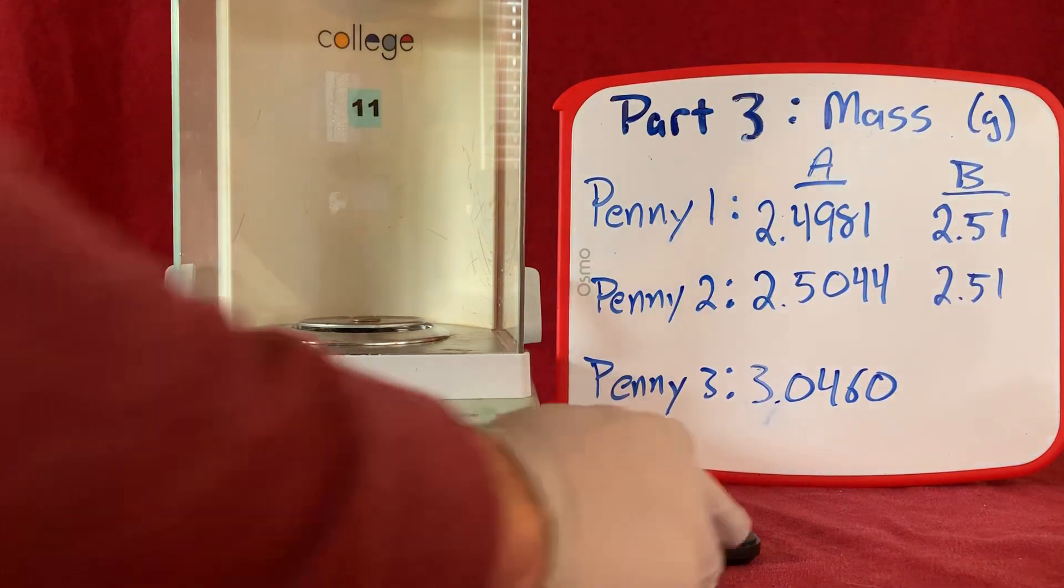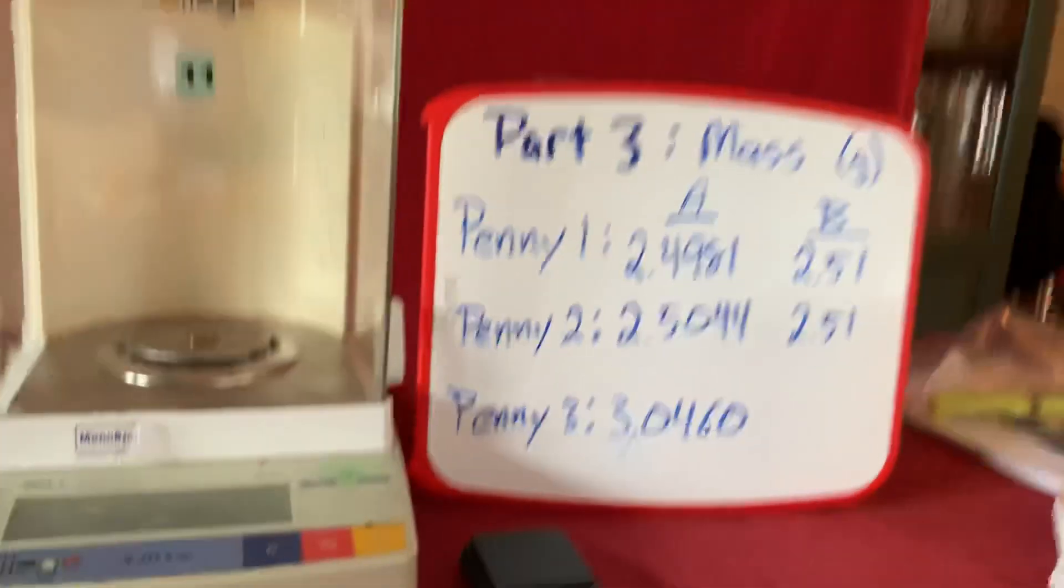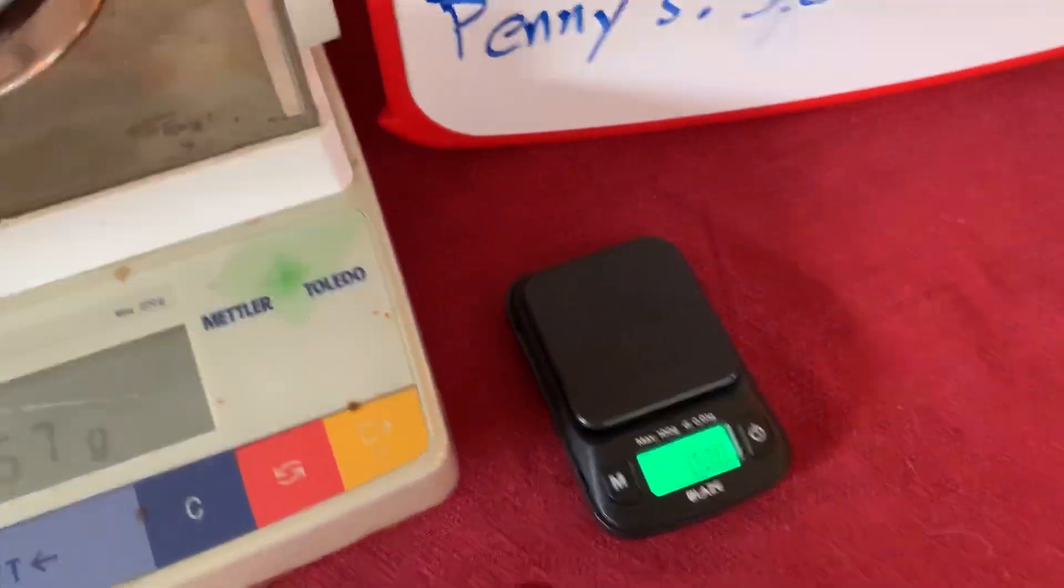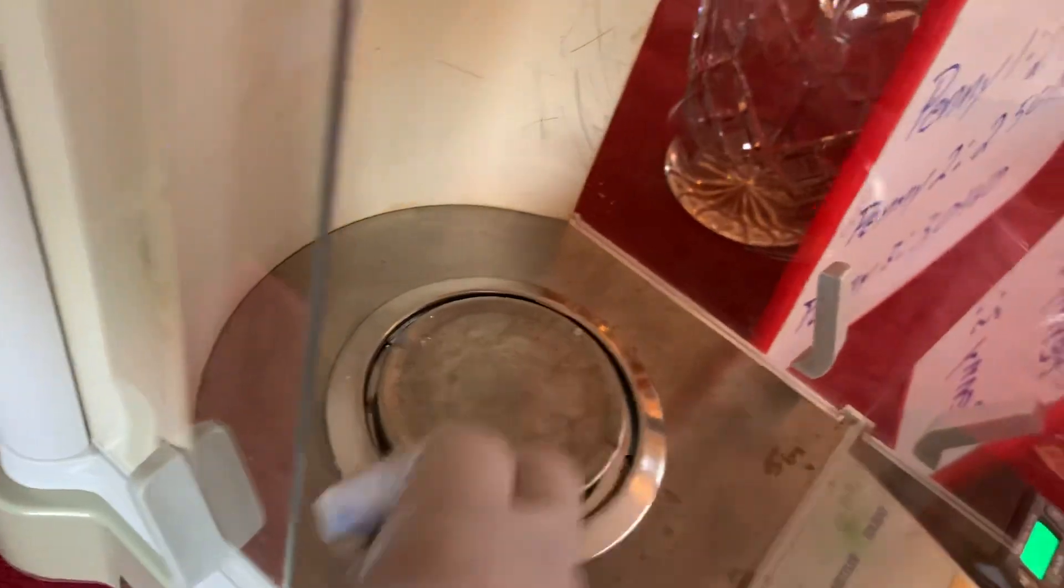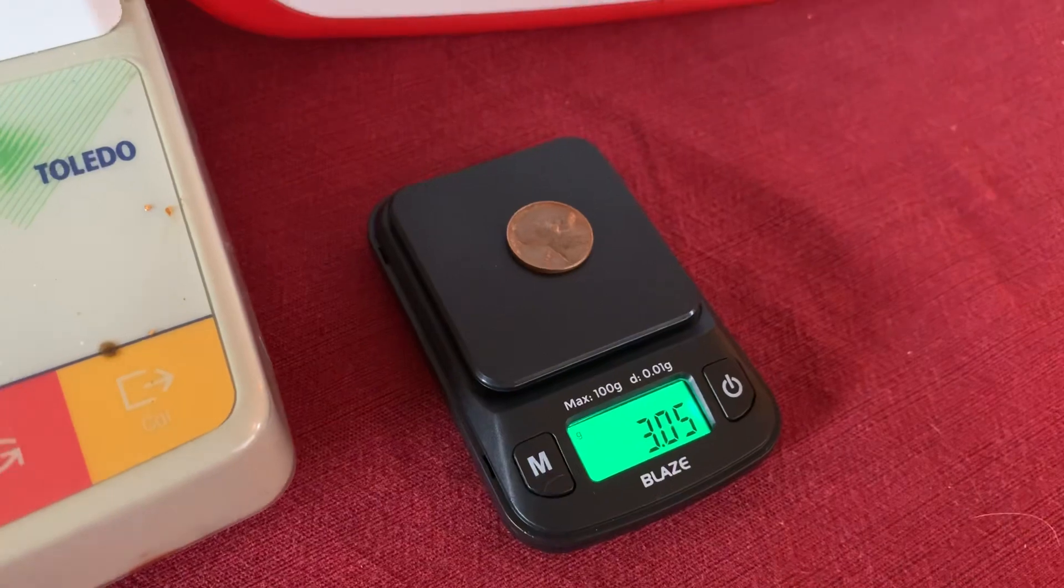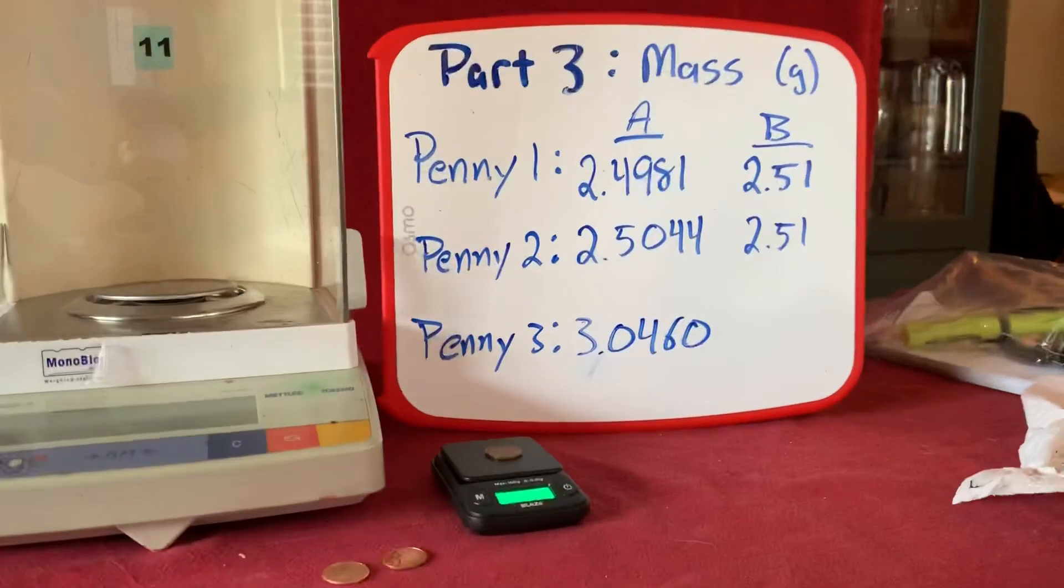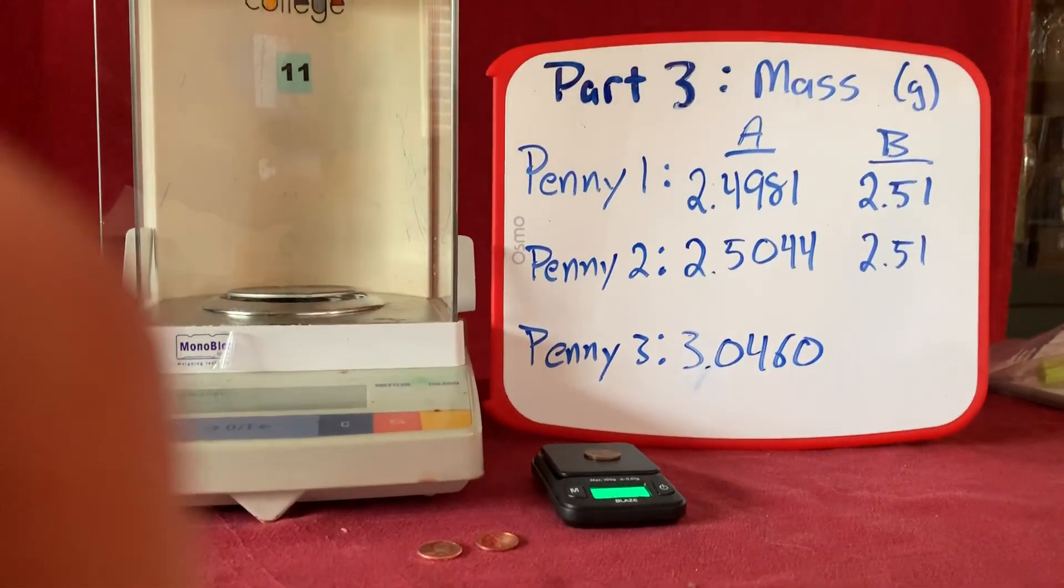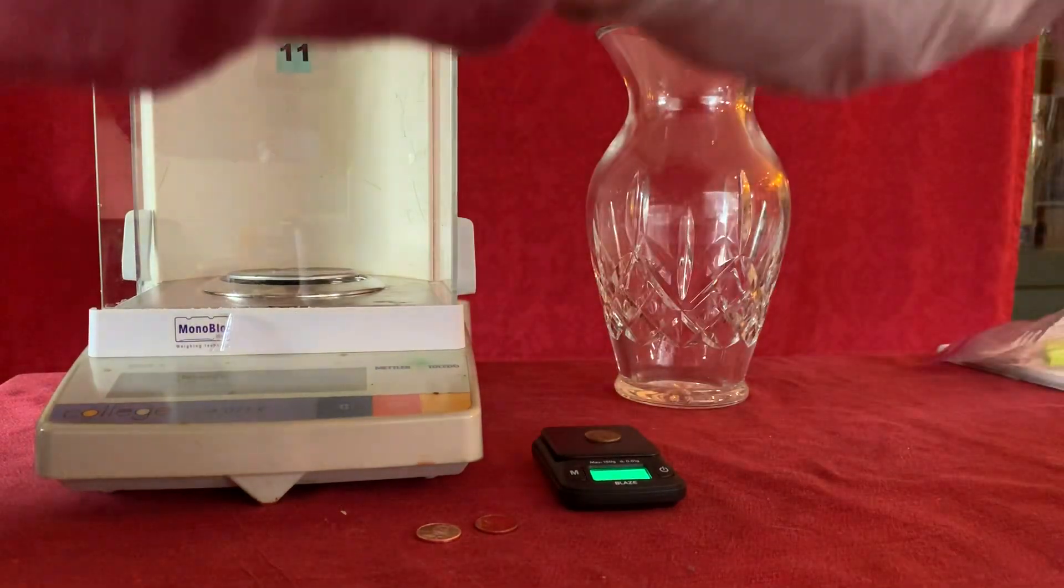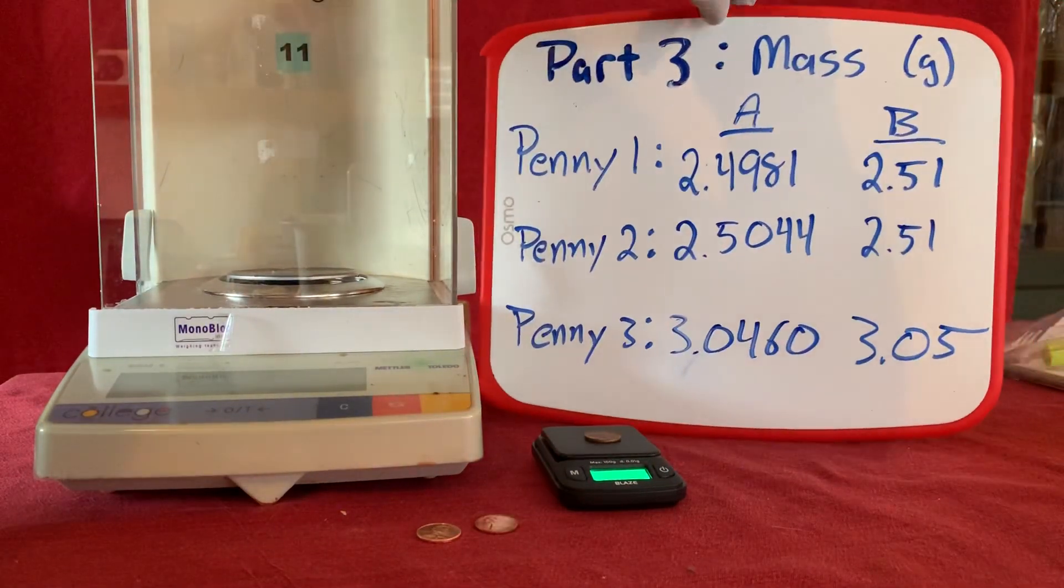Let's take the same measurement on our home balance. I'm going to turn that on. You can see now that that is already tared to zero. Let's put that penny on there. Put it on our home balance, and we see that we have a measurement of 3.05. Notice here we only have two places past the decimal point on this balance. It's because these two instruments have different precisions. 3.05 grams.